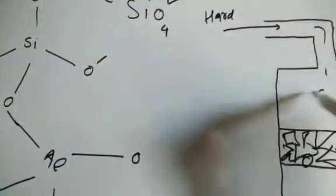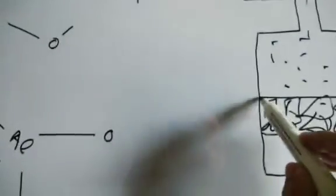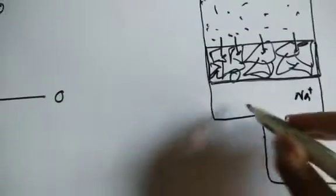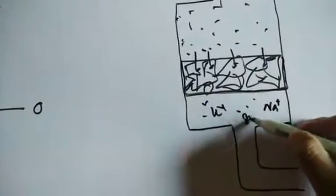Hard water contains calcium, magnesium, and their salts such as chlorides, sulfates, and bicarbonates. The zeolite used is usually sodium aluminium silicate — it is sodium-loaded. As water passes through, calcium and magnesium ions fit into the pores, and sodium ions get released into the water. Small potassium ions may also be released if present.